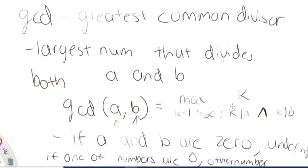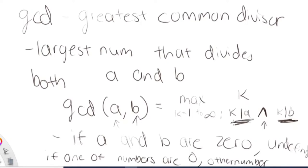You can divide them mathematically. Basically it's just the maximum K from one to infinity, where K has to divide both A and K has to divide B. This is the divide symbol, and this is the and symbol. So this just means the largest possible maximal number from one to infinity that divides both A and B. That's what the mathematical notation means.